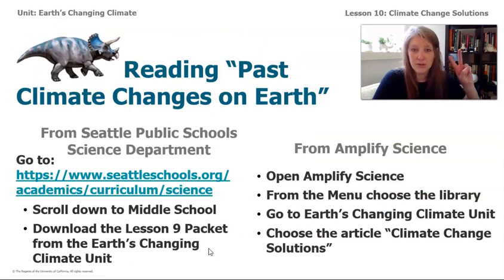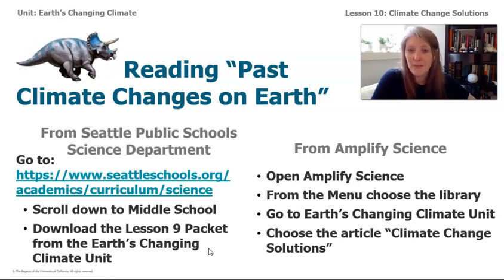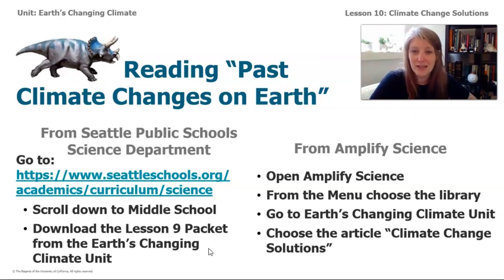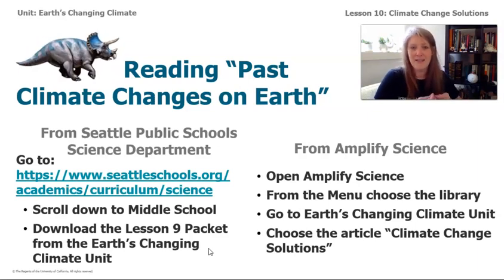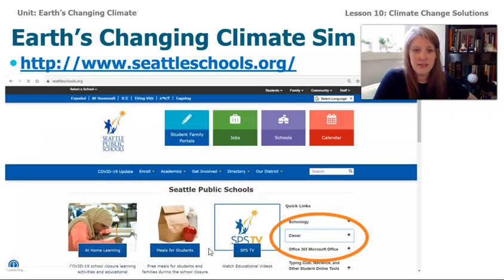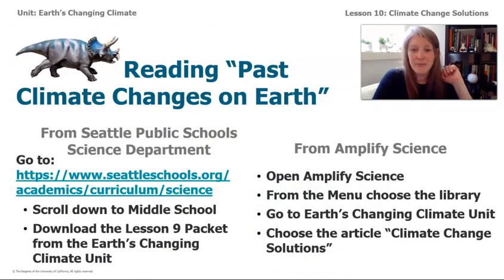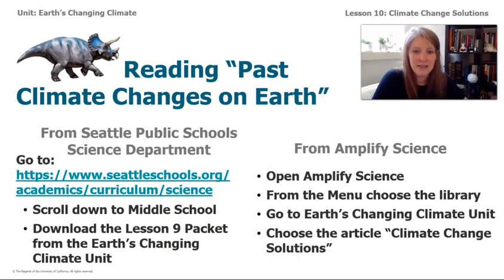To get a copy of the article, you can go to the Seattle Schools Science Department website at seattleschools.org/academics/curriculum/science. Scroll down to middle school, sixth grade, and find lesson 9 of the Earth's Changing Climate unit — the article is in that packet. You can also go to your Amplify account by going to seattleschools.org, clicking on Clever, choosing the Amplify app, opening your account, then opening the menu and going to the library where you'll find the article.